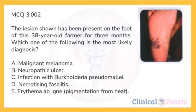Next: the lesion shown has been present on the foot of this 38-year-old farmer for three months. Which one of the following is the most likely diagnosis? A: malignant melanoma. B: neuropathic ulcer. C: infection with Burkholderia pseudomallei. D: necrotizing fasciitis. E: erythema ab igne, or pigmentation from heat. The lesion has the appearance of a nodular malignant melanoma.